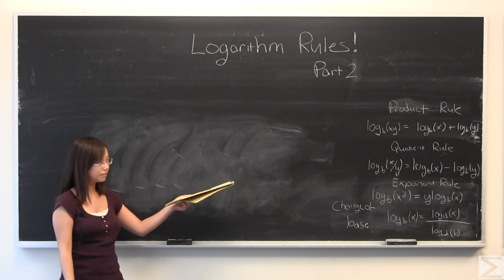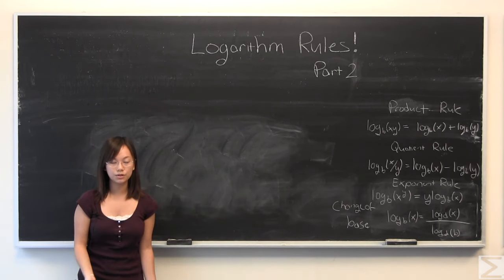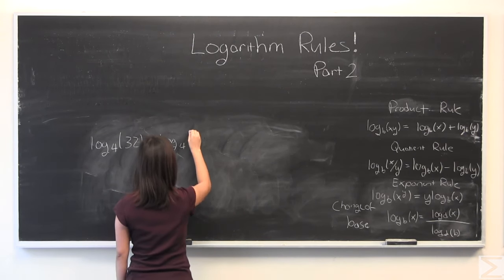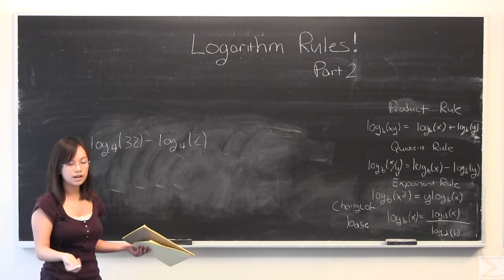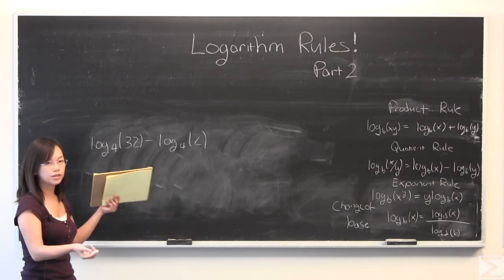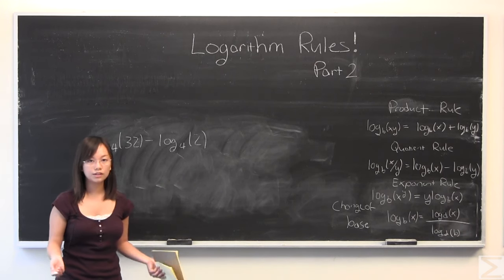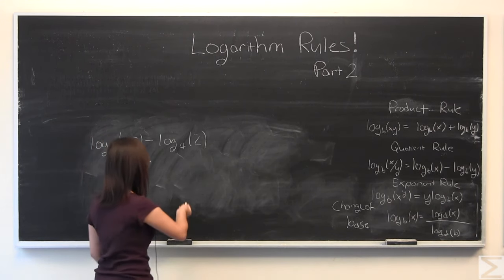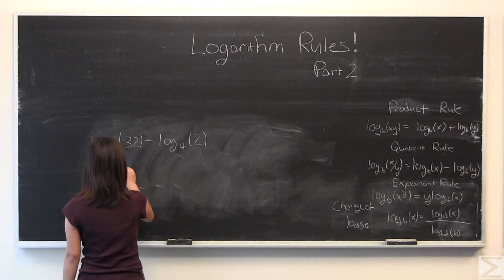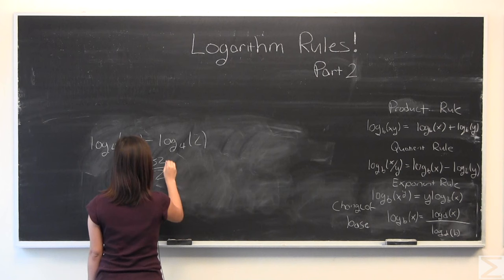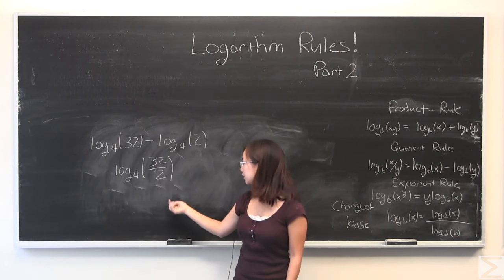I'm also going to give an example for the quotient rule. So this is very helpful because say you don't know exactly log base 4 of 32 off the top of your head. Or say you don't know log base 4 of 2 off the top of your head. Well, easy. We have it subtracting. So we can just use a quotient rule to solve this. 32 over 2, that's equal to 16.